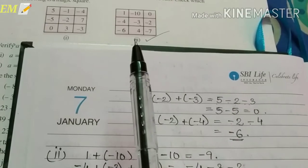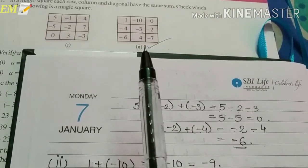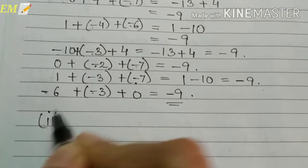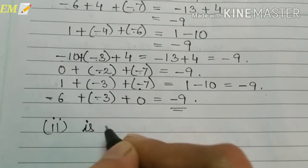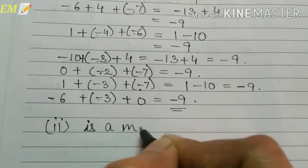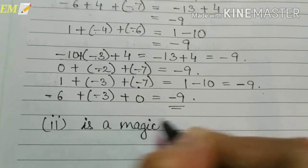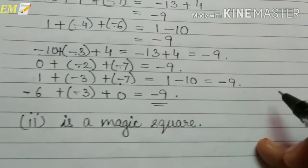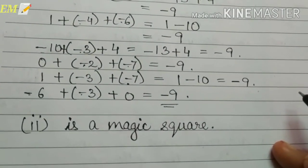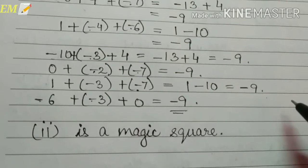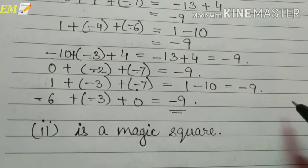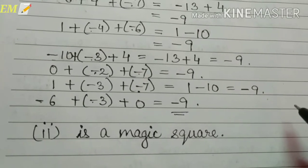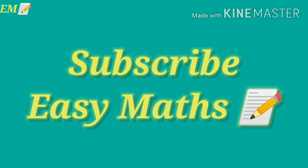The answer is: the second is a magic square. So question 7 is finished. Thanks for watching. Please comment if you have any suggestions or doubts, and please like, share, and subscribe to my channel for the next video.